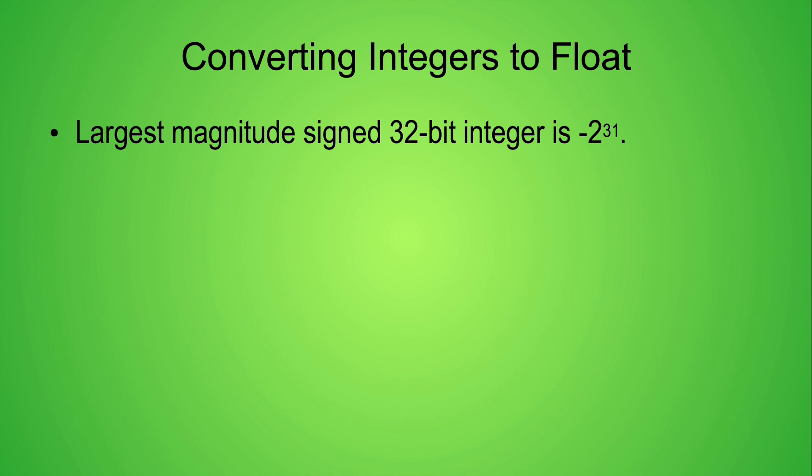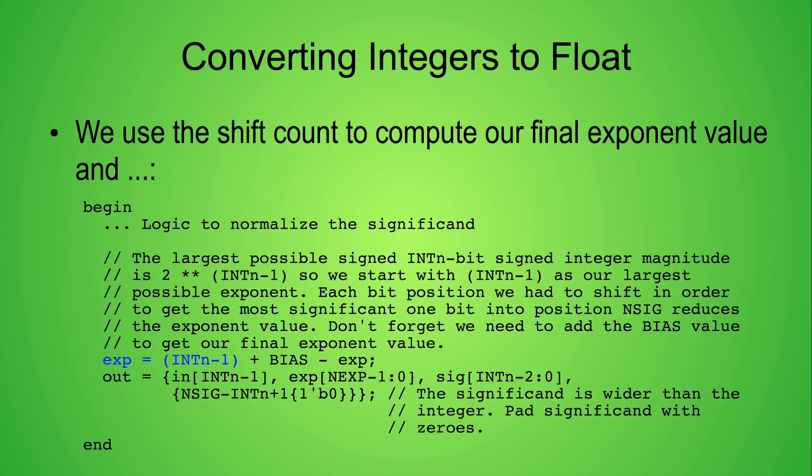It is time to compute our final exponent value. The 32-bit signed integer value which has the largest magnitude is negative 2 raised to the 31st power. Note that this exponent is 1 less than the number of bits in our integer input. That is where the value int_n minus 1 comes from when we compute the final exponent value. To that value we add the exponent bias value. As a reminder, the IEEE 754 formats use an unsigned exponent field, so we need to add a bias value so that negative exponents can be represented by positive values. Then we subtract the value stored in EXP to adjust our exponent value for each place we shifted the value SIG to the left.